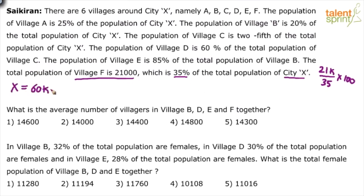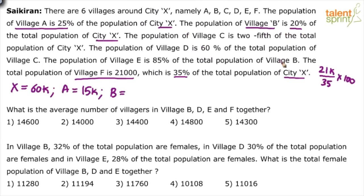Now we can find out the values easily. Population of A is 25 percent of X, so A is 25 percent of 60,000, which is 15,000. Population of B is 20 percent of X, so 20 percent of 60,000 is 12,000. Population of C is two-fifth, which is 40 percent of X. 40 percent of 60,000 is 24,000.